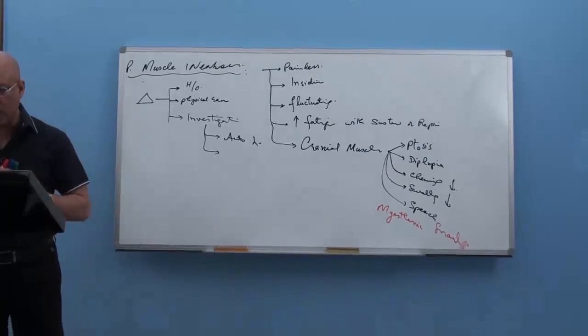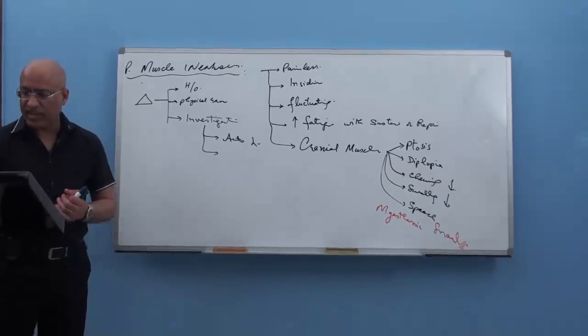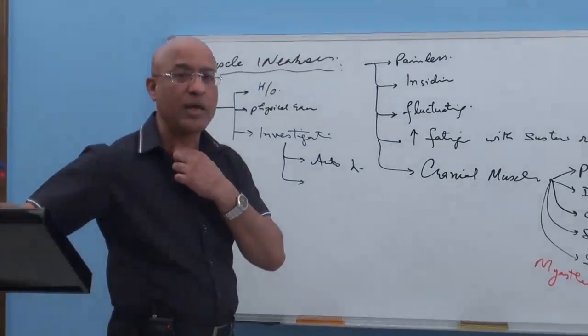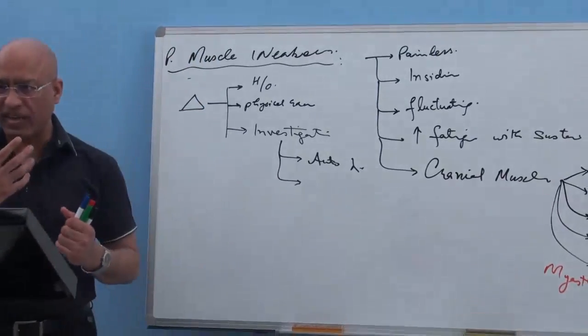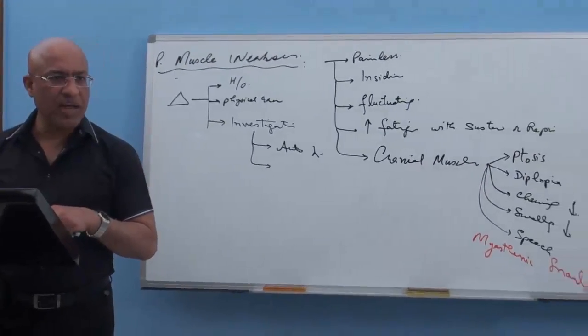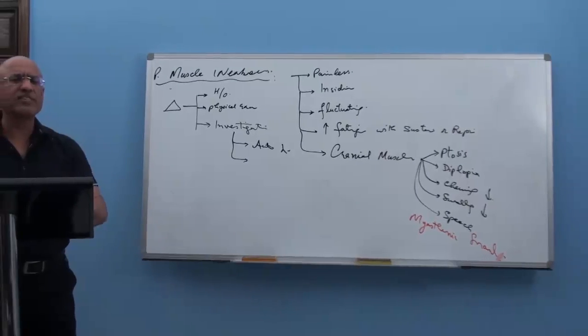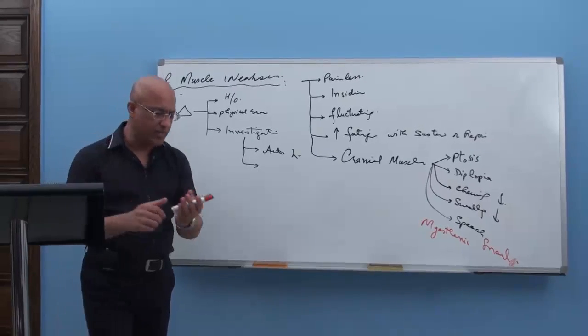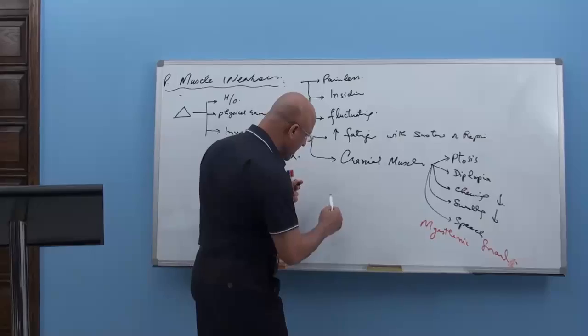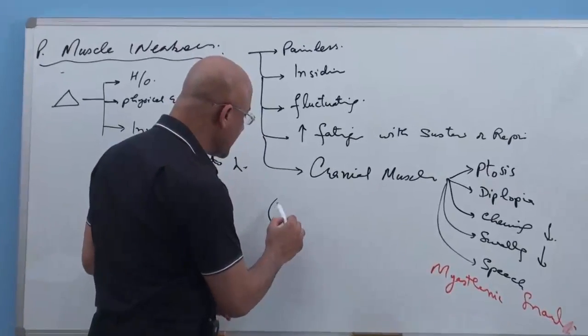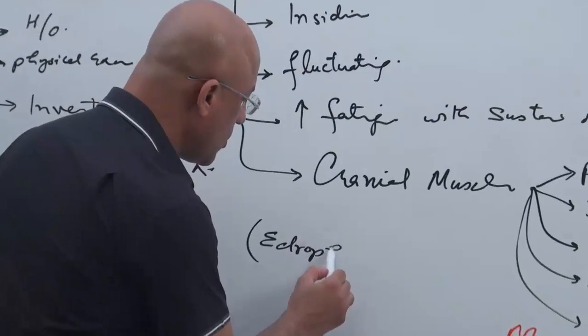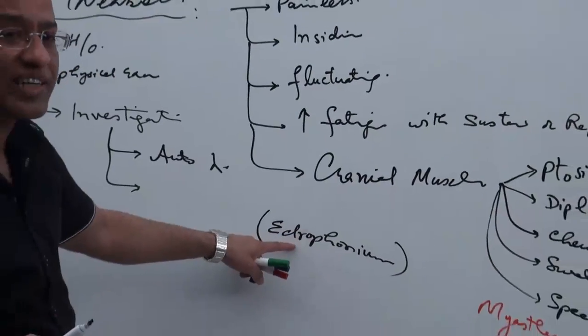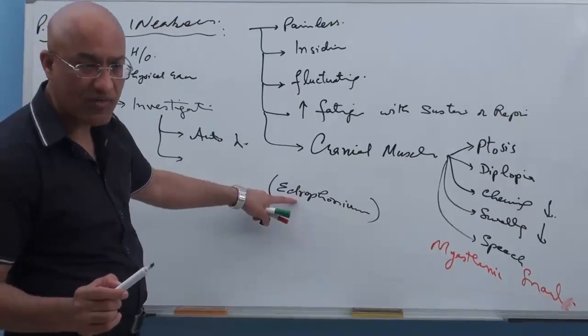Then, the other investigations, these were electrophysiological studies. Then, other investigation important is in these patients, we also do CT scan or MRI to look for thymoma or thymic hyperplasia, is there any increase in the thymus or not. And then, some tests are done. One test is done, tensilon test. Now, it is done less often. But anyway, tensilon is a drug which is having active agent edrophonium. Edrophonium. Now, this is very short-acting anti-cholinesterase drug.